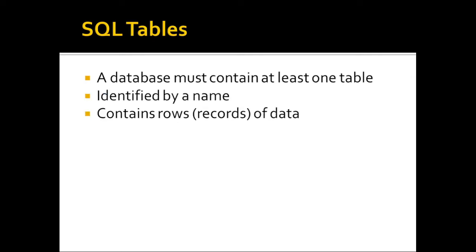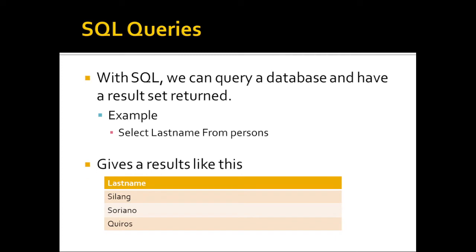A database must contain at least one table, identified by a name. The table contains rows or records of data. With SQL we can query a database and have a result set returned. For example, 'SELECT LastName FROM Person' is an example of a SQL query that gives us the last names of persons stored in the table — this is a table and this is a field.